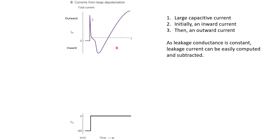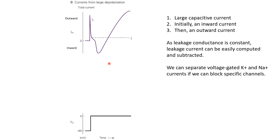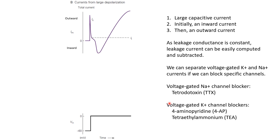For that, we can use the pharmacological agents as we saw in the last video. For sodium, we can block the voltage-gated sodium channels using tetrodotoxin. Similarly, for potassium, there are other chemicals like 4-aminopyridine or tetraethylammonium — either of which can be used to block the voltage-gated potassium channels. So if we repeat this same experiment in the presence of either tetrodotoxin or one of these two chemicals, we will be able to see what component of the current is caused by sodium and what component is caused by potassium.